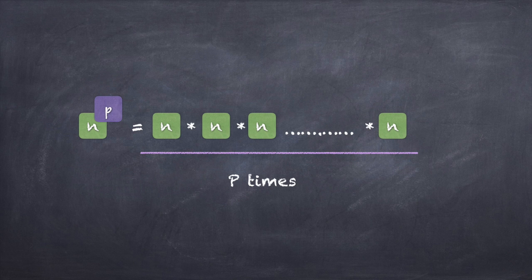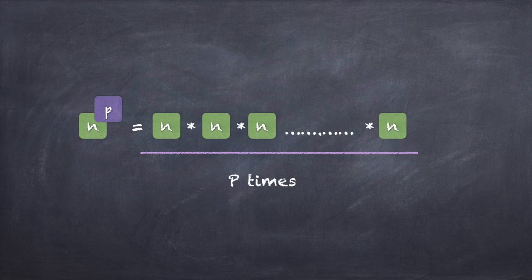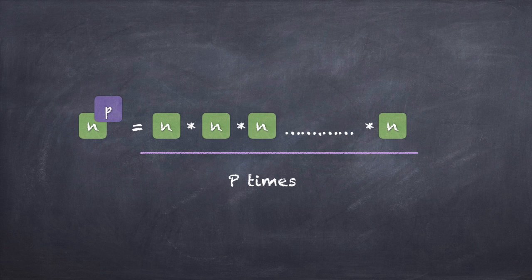Now let's form the general form. The general form would be n raised to p — n is the base, p is the power. So n raised to p means n x n x n, p times. For those who are scared of maths and find n and p intimidating, just substitute specific numbers — say 3 instead of n and 5 instead of p. Use a concrete example to learn and then generalize. For instance, 7 raised to 3, or 5 raised to 11, which would be 5 multiplied by itself 11 times. That is the basic idea behind indices.